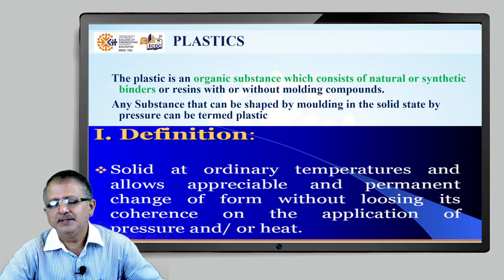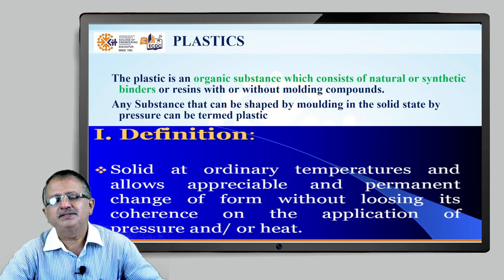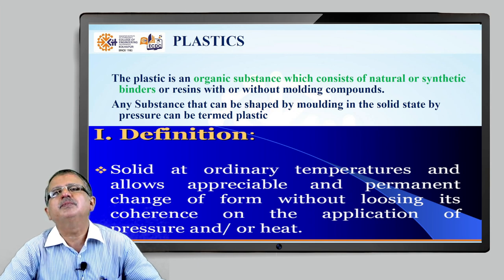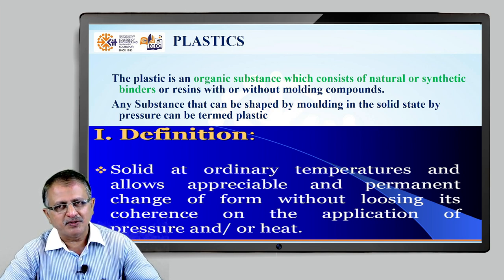Plastic is a material consisting of a wide range of synthetic or semi-synthetic organic compounds that are malleable and can be moulded into solid products. Plasticity is a property of a material to irreversibly deform without cracking, and this property is utilized in plastics. Plastic is a material which is solid at ordinary temperature and it allows appreciable and permanent change of form without losing its coherence on the application of heat, pressure, or both.